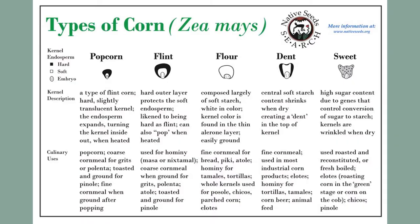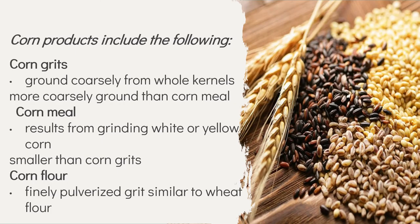Corn products include corn grits, cornmeal, and corn flour. Corn grits are ground coarsely from whole kernels, more coarsely ground than cornmeal. Cornmeal results from grinding white or yellow corn and is smaller than corn grits. Corn flour is finely pulverized grits, similar to wheat flour. Grits are a staple Southern American dish made from ground dried corn, particularly rich in iron and B vitamins. Cornmeal is the traditional ingredient in cornbread and is also used for texture and sweetness in cookies. Corn flour mills from dried whole corn kernels; it contains the hull, germ, and endosperm and is considered a whole grain flour.